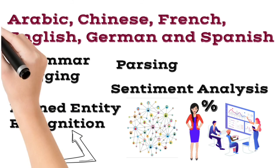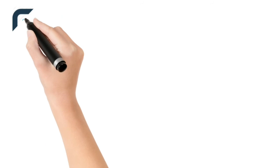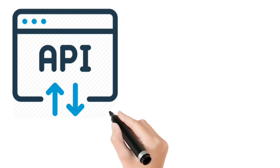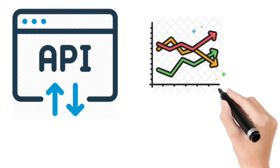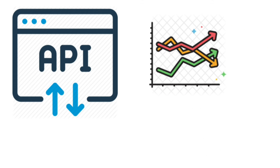An important thing about this Core NLP library is that it also includes a web API server, which is a convenient way to serve predictions without too much additional work. With the help of Core NLP, we can use a web API server and deliver better predictions with less effort.